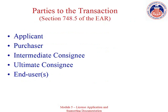It's important on an export license application to correctly identify all parties involved in their role in the transaction. Parties include the applicant, purchaser, and ultimate consignee, and may also include an intermediate consignee and end users. The definitions of each of these parties is available in Section 748.5 of the EAR. BIS export counselors are available to provide additional guidance on more complex transactions.